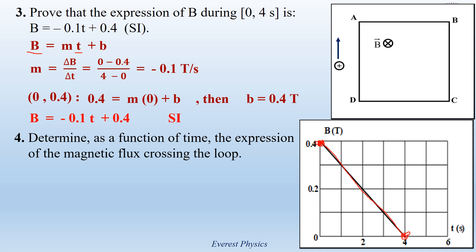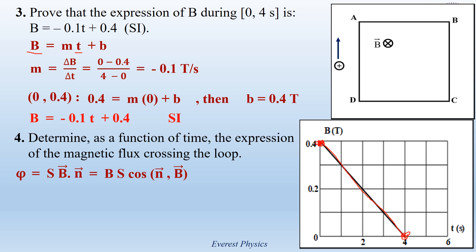Part 4. Determine as a function of time the expression of the magnetic flux crossing the loop. The magnetic flux is given by the formula phi equals B scalar N, which equals the magnitude of B times the magnitude of N times cosine of the angle between B and N. But N is a unit vector, so the magnitude of N is equal to 1. Therefore, the flux is equal to B times S times cosine of the angle between N and B. The unit vector N is given using the positive sense. The positive sense in the figure is oriented in the clockwise sense. So curl the fingers of your right hand in the positive sense, and the thumb indicates inward. Then N is directed inward.